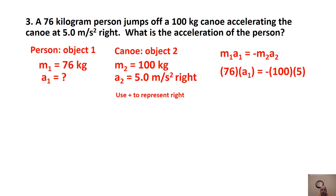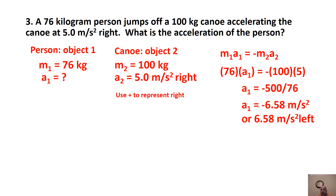The key here is to keep masses and accelerations correctly matched to their respective objects — that's where mistakes happen in these problems. Plugging in: 76·A1 = −(100)(5) = −500. Dividing by 76: A1 = −6.58 meters per second squared. Since positive represented right, the answer is 6.58 meters per second squared to the left.